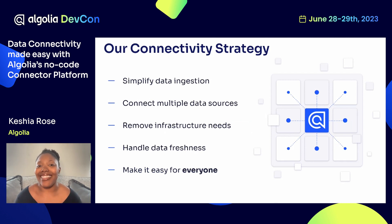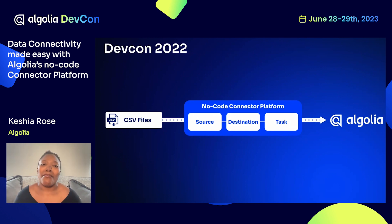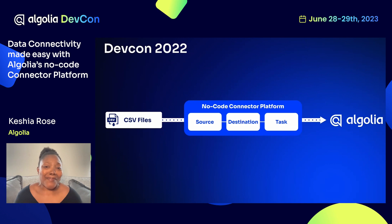Let's take a look at what we did last year at DevCon 2022. We showed the very beginnings of our new no-code connector platform, showcasing three main building blocks: the Source, which lets you define how to access your data; the Destination, where in Algolia you want to put that data; and the Task, which brought the source and destination together and told us how to process and handle that data. Last year, I only showed APIs and only had the CSV file connector — it really was the very basics of our platform. But we have grown so much since then.